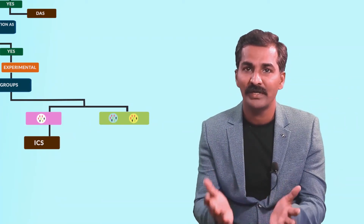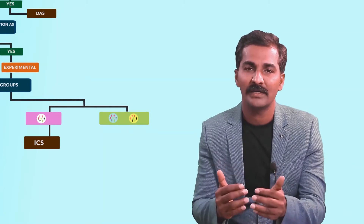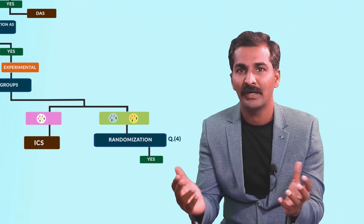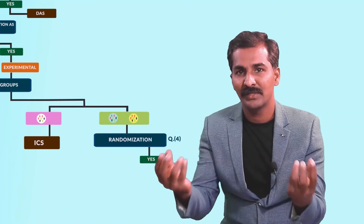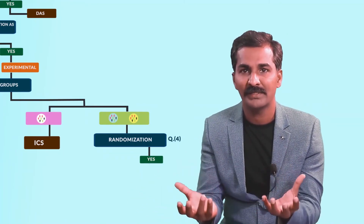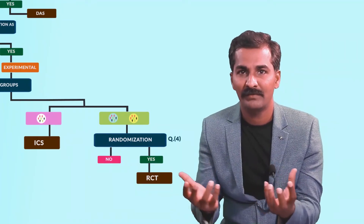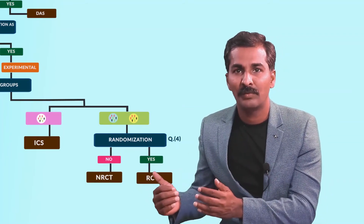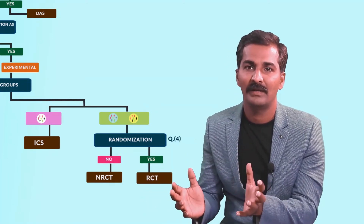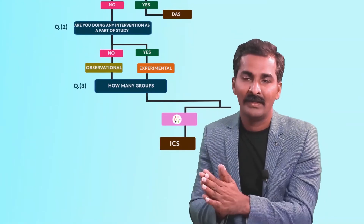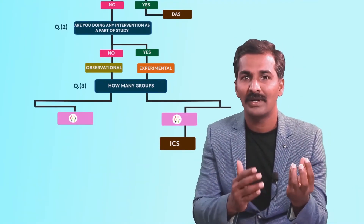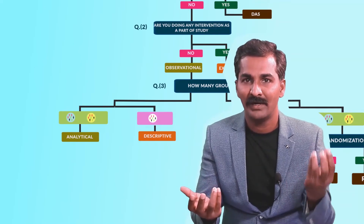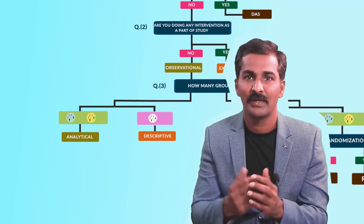For experimental studies with more than two groups, ask whether subjects are randomly assigned to the intervention groups. If yes, it is called a randomized controlled trial. If not following any randomization procedure, they are called non-randomized controlled trials. In both cases, subsequent procedures like blinding and allocation concealment apply. For observational studies, if you have only one group they are called descriptive studies; if more than one group, they are called analytical studies.